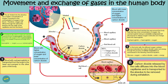In the red blood cells, there is a dark red-coloured compound known as hemoglobin. Hemoglobin will combine with oxygen to form oxyhemoglobin, which is an unstable compound and bright red in colour. Blood with oxyhemoglobin is transported from the lungs to the heart to be pumped to the other parts of the body.